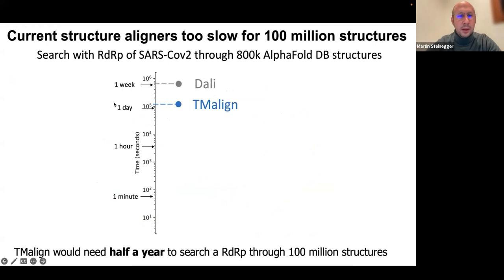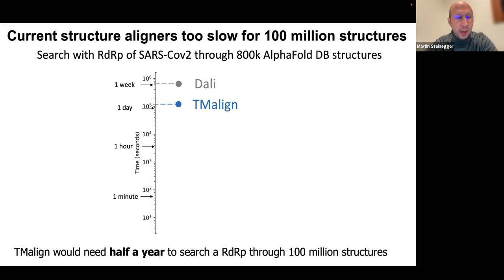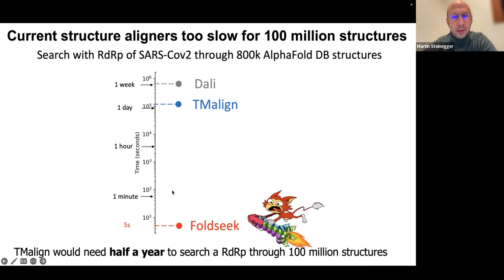The field of aligning structures is quite old and there's a lot of really good software — DALI and TM-align are highly cited and widely used, producing really good structural alignments. But they have a scaling problem with current database sizes. For example, searching with an RdRP from SARS-CoV-2 against 800,000 structures in the AlphaFold database takes DALI or TM-align up to a few days to a week. If you want to search through the full AlphaFold database, which currently has about 200 million structures, it would take years to get a result. With FoldSeek, we've built something like a structural aligner that can do it in five seconds — searching through 800,000 structures in five seconds — and scales to hundreds of millions of structures.